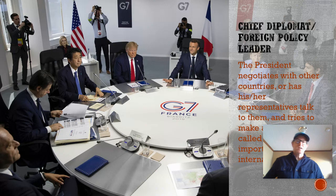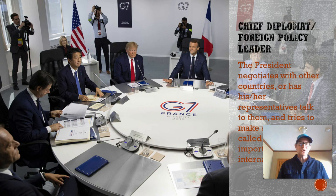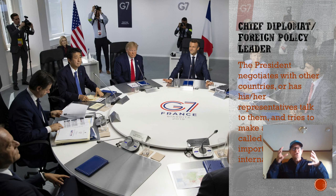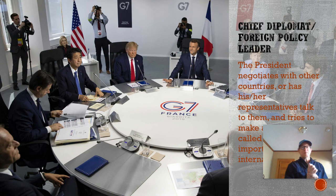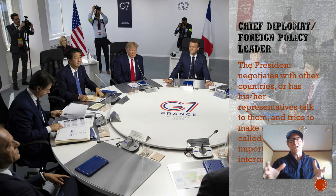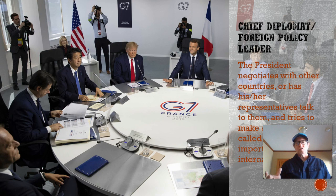Chief diplomat, also known as foreign policy leader: the president negotiates with leaders of other countries, or has representatives do so. Formal agreements are called treaties; informal agreements with foreign leaders are called executive agreements. When the president is talking with leaders of other nations about important international matters and coming up with joint solutions, he's playing chief diplomat. Here you see the G7 2019 meeting — the seven largest western economies making agreements about global prosperity and trade.